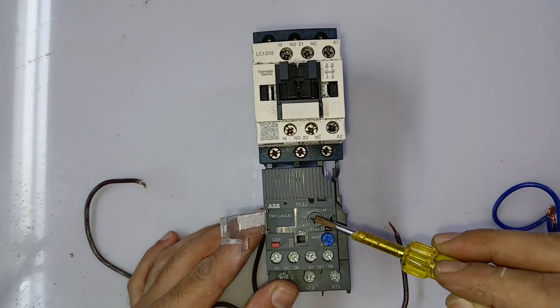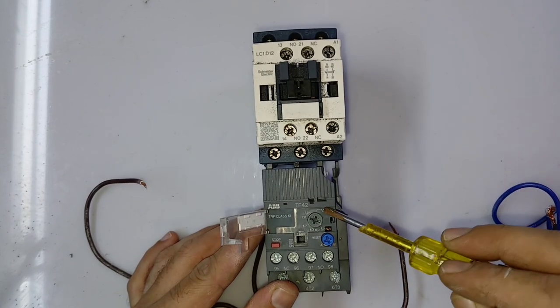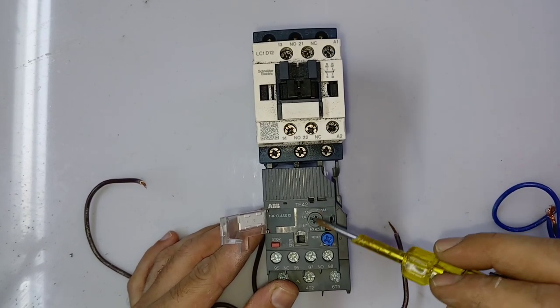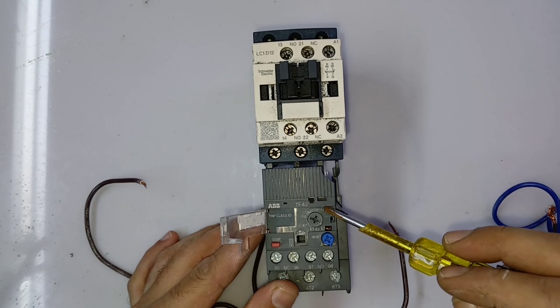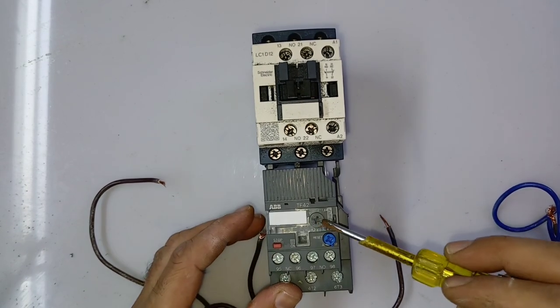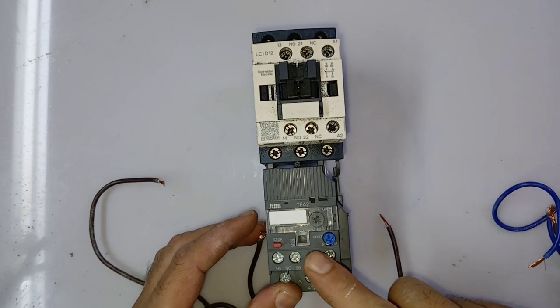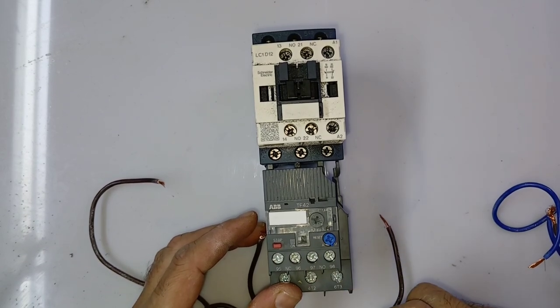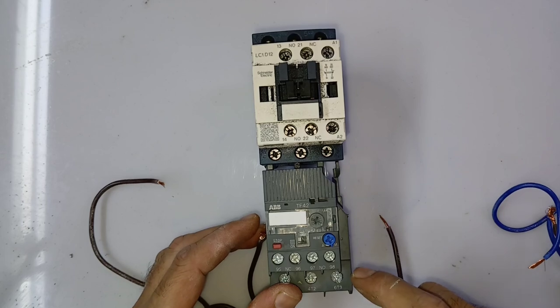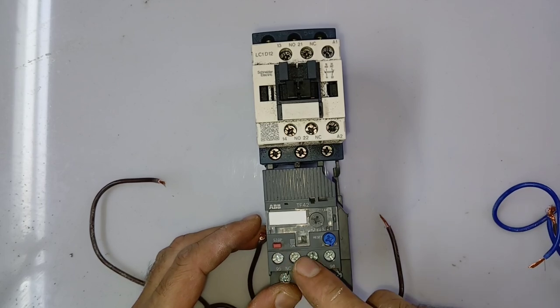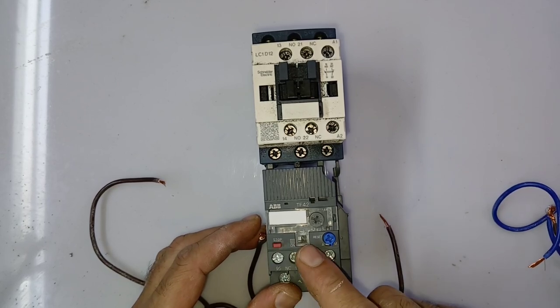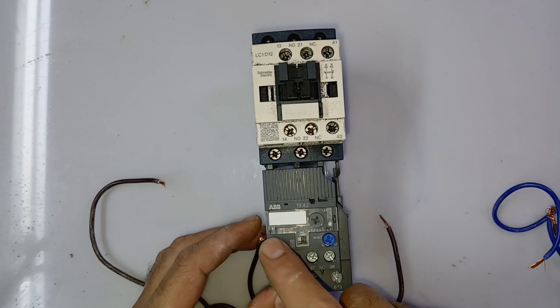Now you can see this is ampere setting - you can set till 7.6 ampere on this overload. And this is the reset switch. By pressing this switch you can reset it once it gets tripped. You can see it was in test mode, so I pressed it and it's reset already.